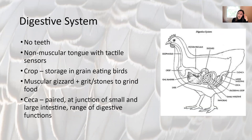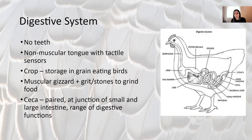The crop comes after the mouth and esophagus and is used for storage — especially in grain-eating birds, which have a big crop to store food. Then we go to the gizzard, where birds grind up food with stones. Another important adaptation in birds is the cecae — there are paired cecae at the junction of the small and large intestine that secrete digestive enzymes, making them an important organ in birds to aid in digestion.